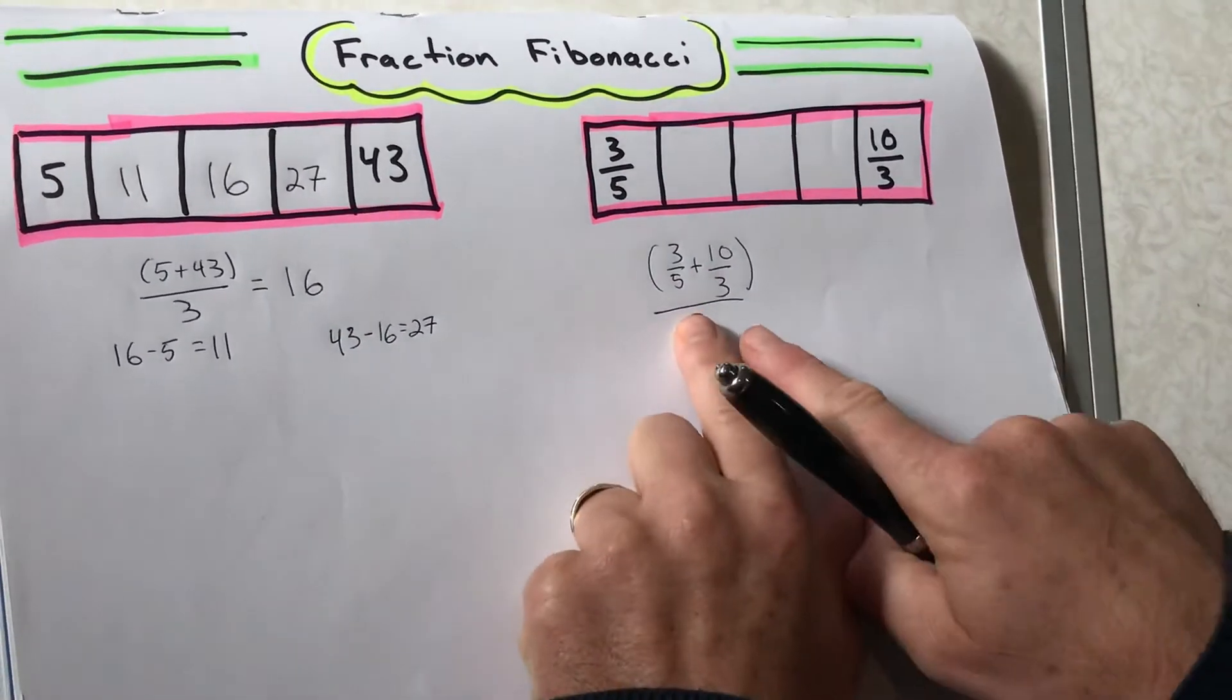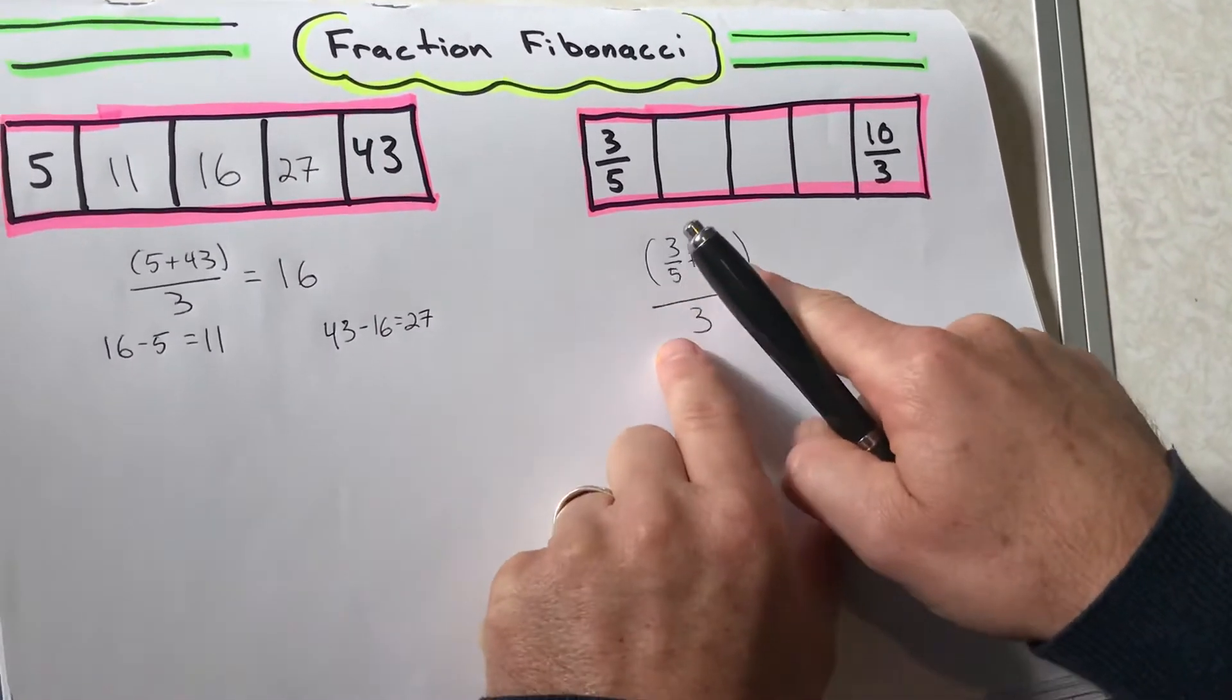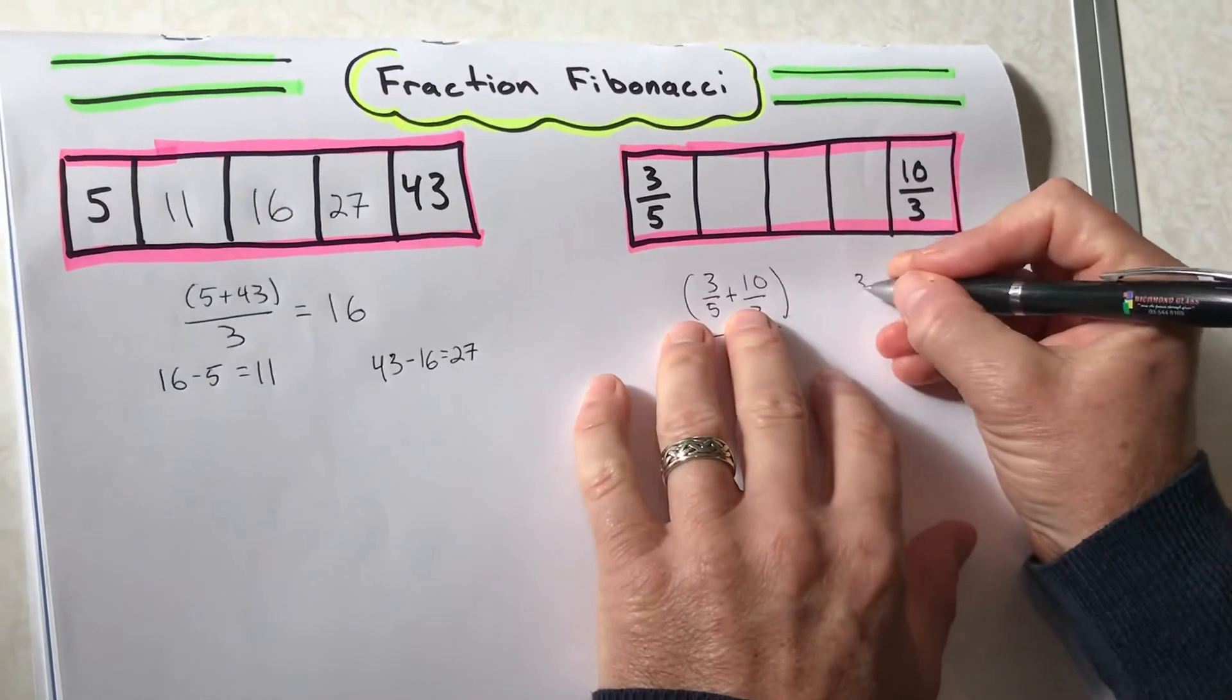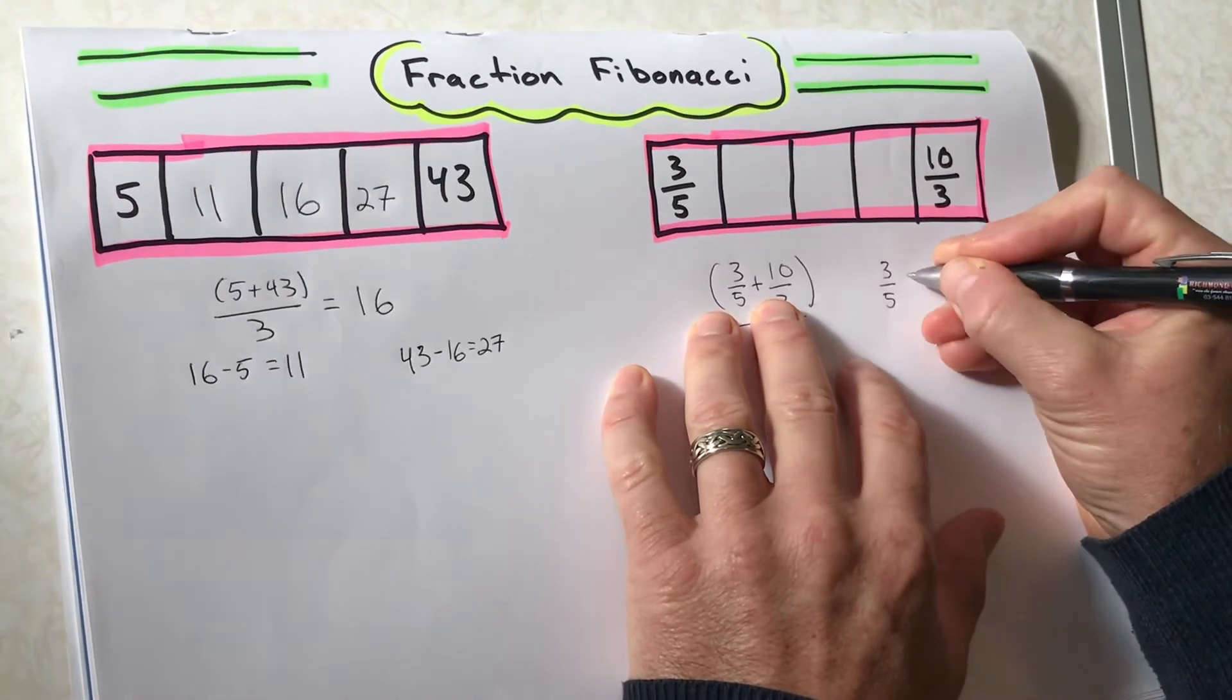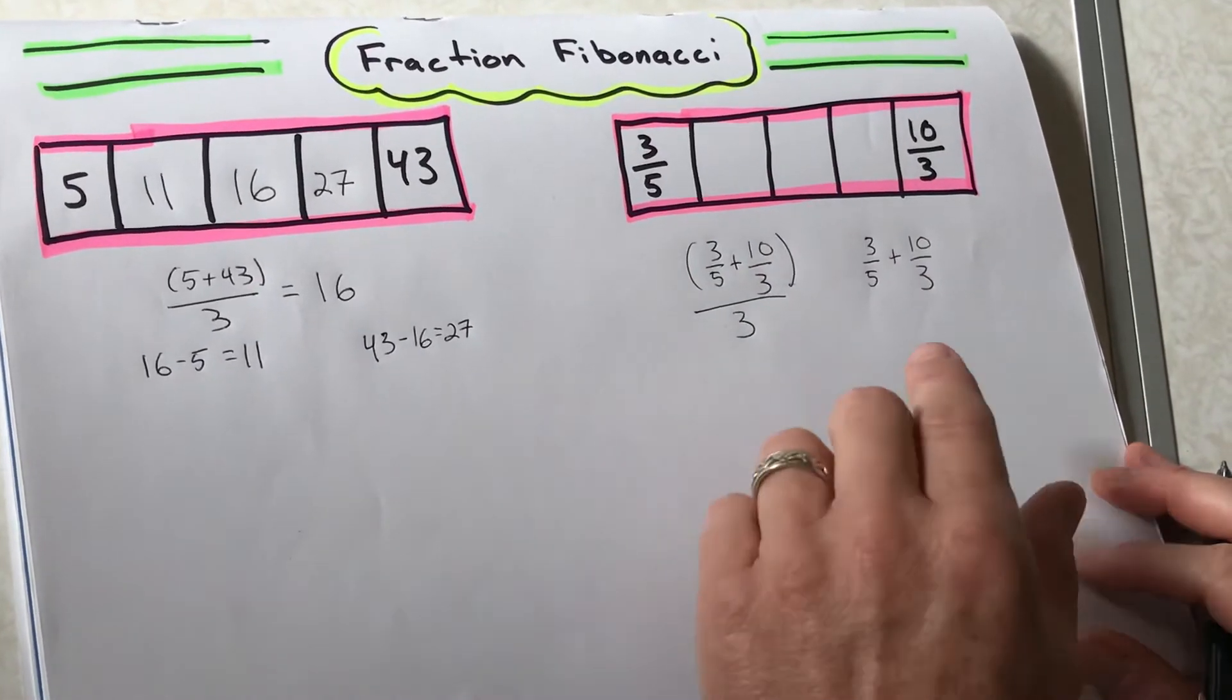Okay, so right now, we can use a calculator and do that. But let's try to do it without a calculator. I'm gonna try to add 3 fifths plus 10 thirds without a calculator first, and then I'll divide by three.